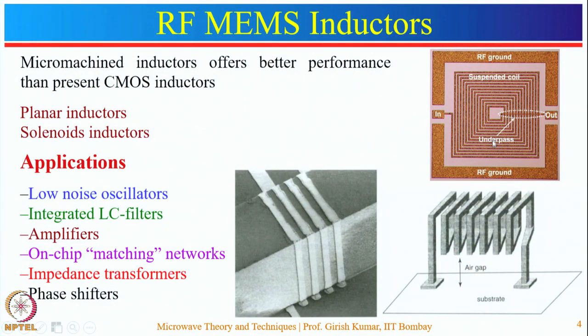In general, inductors are made in three-dimensional geometry, but there are demands for planar inductors. High quality inductors in RF design should provide high gain, low insertion loss, low phase noise, and high selectivity. The RF-MEMS based inductor is the solution. These are of two types: planar inductors and solenoid inductors. The planar inductors could be spiral or meandering in shape. The spiral inductor's inductance can be increased by increasing the number of turns, but this increases the capacitance between turns, which reduces the quality factor.